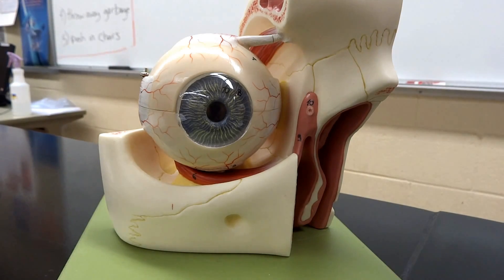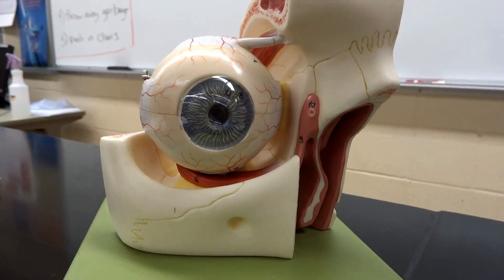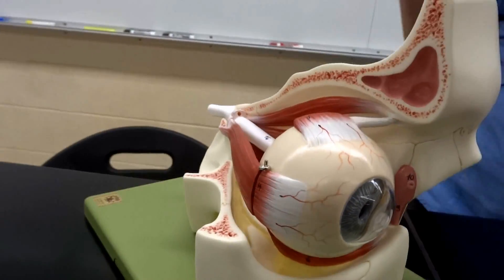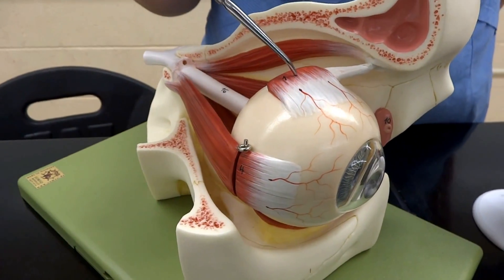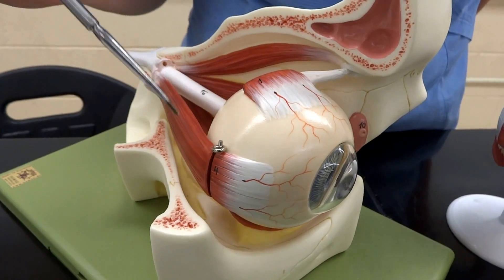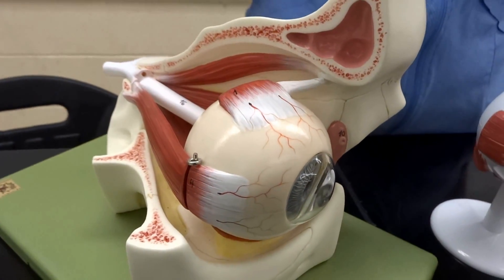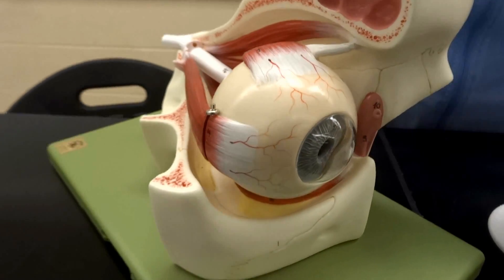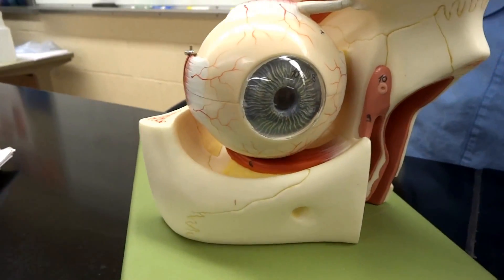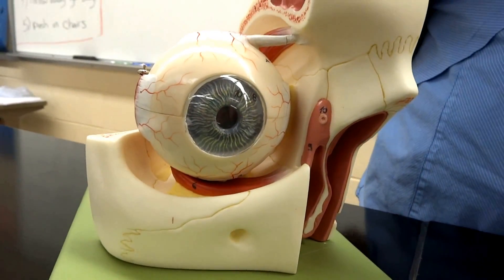So here we can also see a lot of the muscles. Then if we pan over here to this side and above, you can see all of the muscles. Those are our extrinsic eye muscles. They are skeletal muscles. These are the ones that are going to help you turn your eye, rotate your eye, roll your eyes when we're making really corny jokes. And those are, again, all skeletal muscles, meaning we have complete control over them.